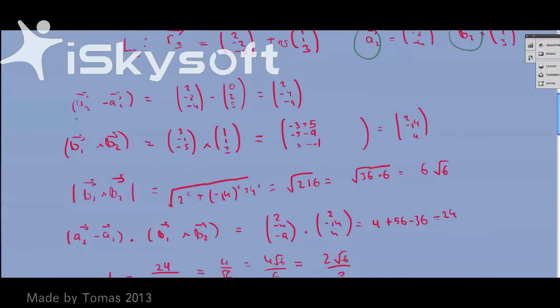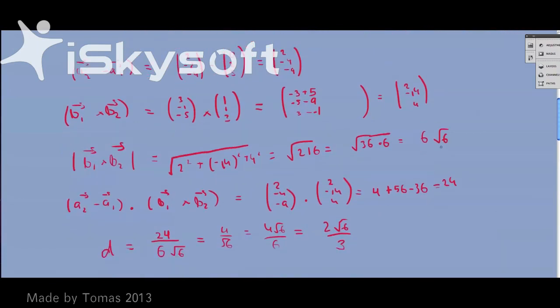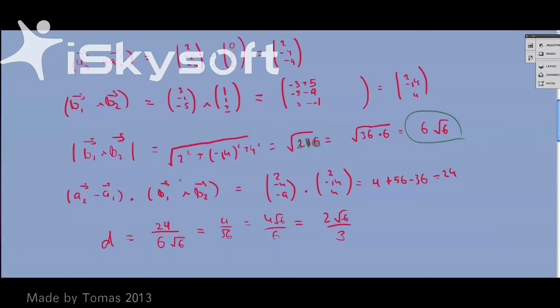So first of all, we do A₂ minus A₁, we find the answer, we do B₁ times B₂, we find the answer, we find the length of that, which is 6√6, and don't bother looking this up on calculator, just think about it, because this is a non-calculator exam. And now we do the dot product of A₂ minus A₁ dot product of B₁ times B₂, we get 24, and then we get d is 24 over 6√6 is 4 over √6 is 4√6 over 6 is 2√6 over 3, which is your final answer.